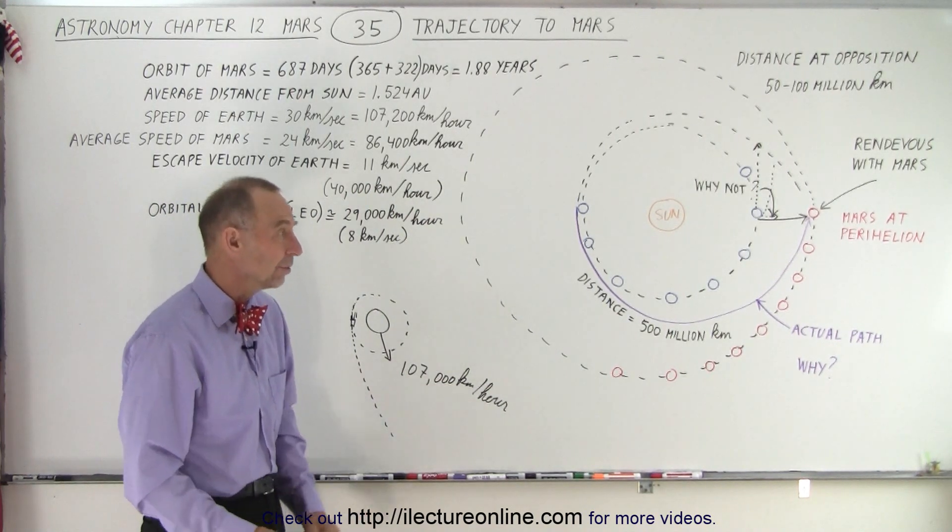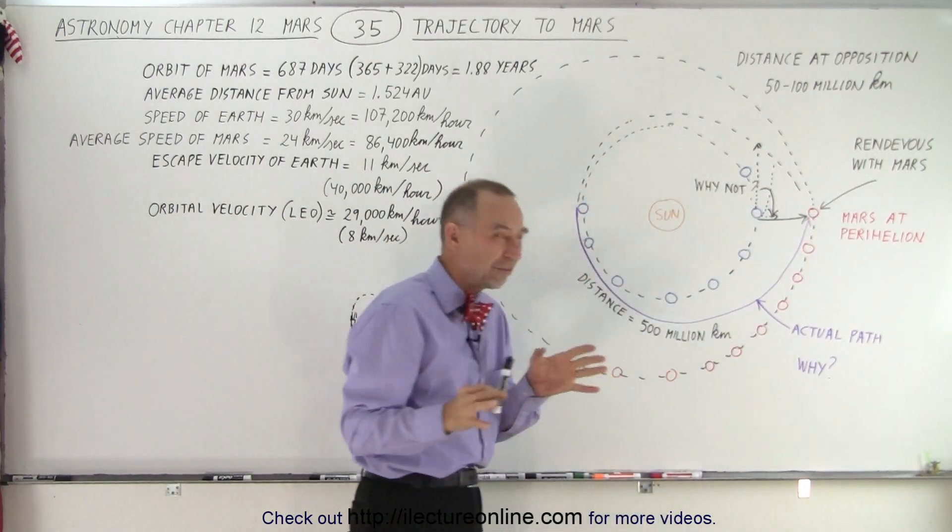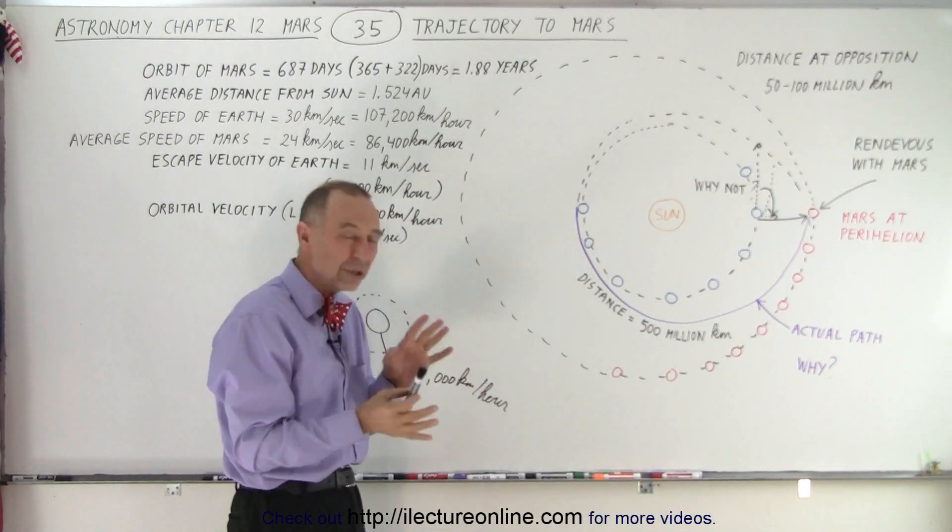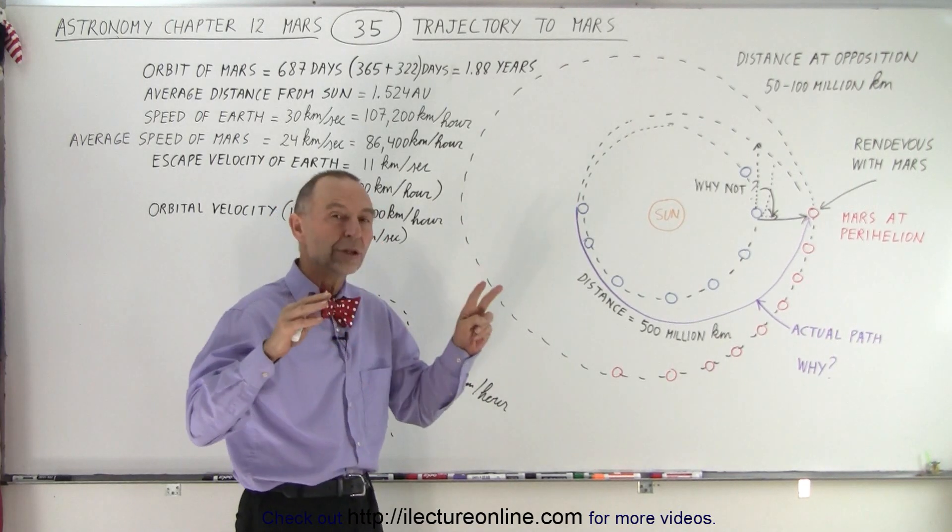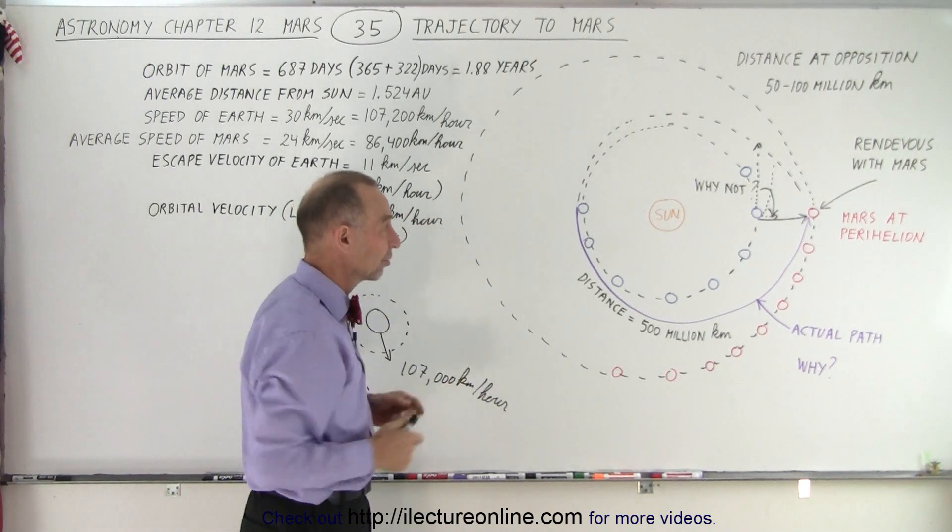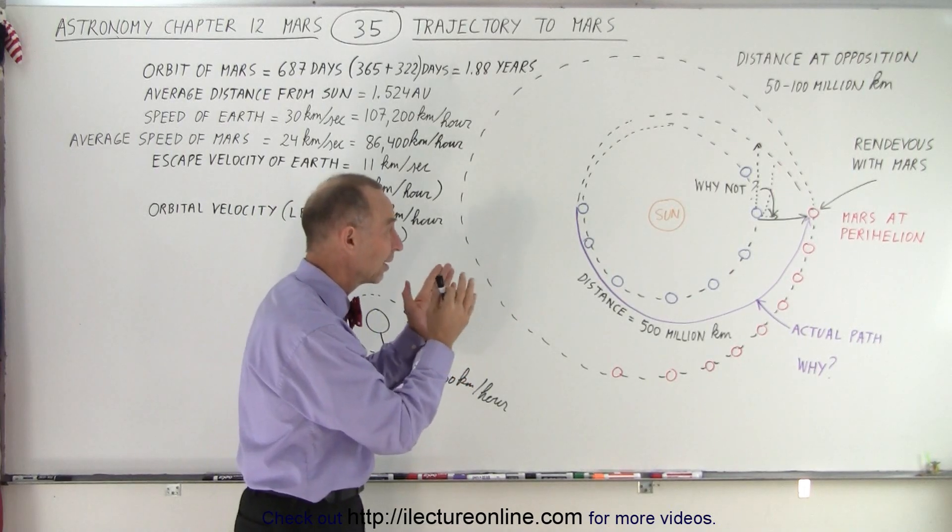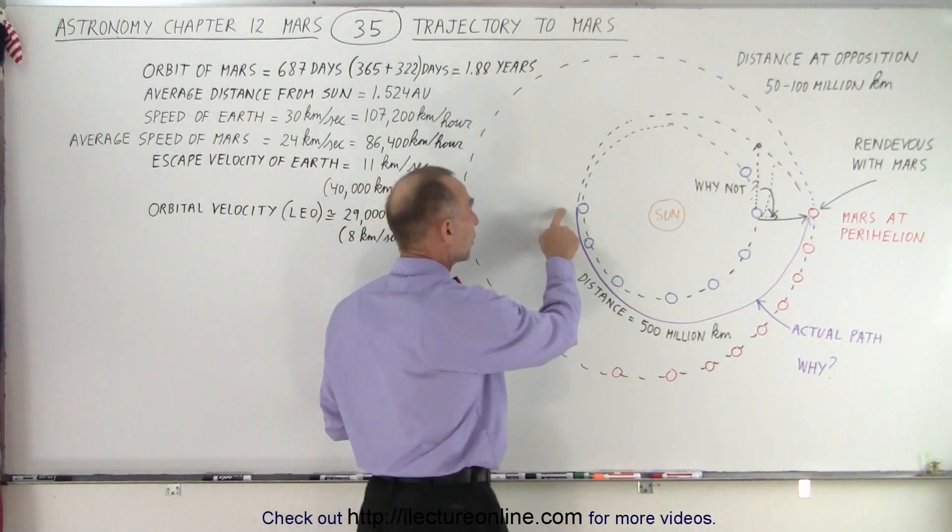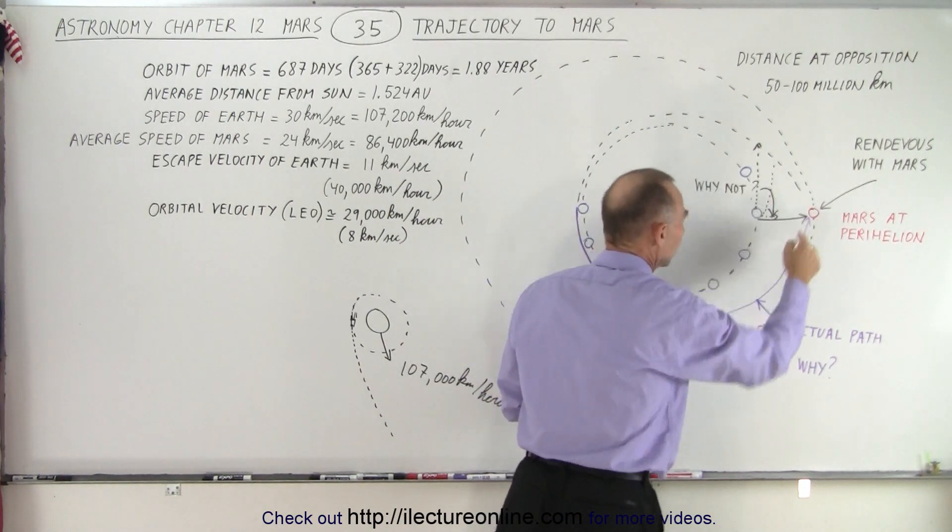Now, it turns out that this situation only happens once every two years and a month, two years and two months, somewhere in that neighborhood. So we have what we call a launch window that only occurs once every two years. So this situation occurs only once every two years. So whenever we send something to Mars, we wait for that condition where Earth will be over here and then Mars will be over here when the spacecraft reaches it.